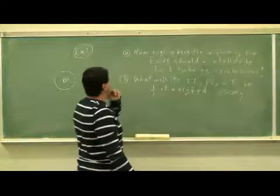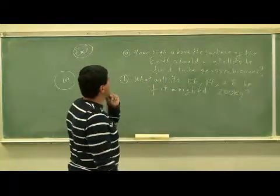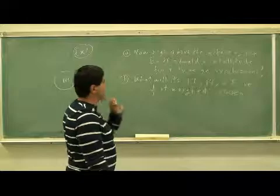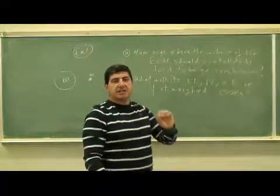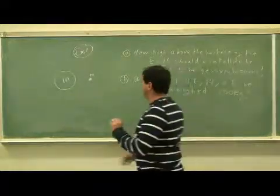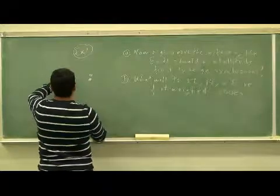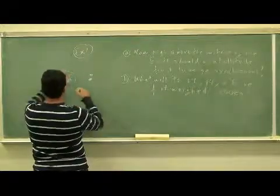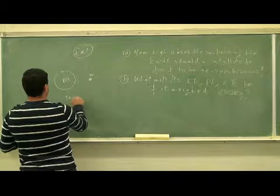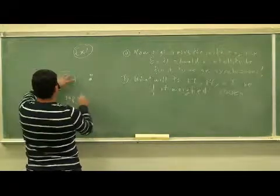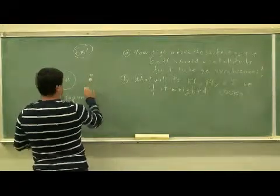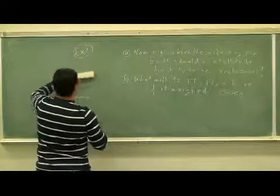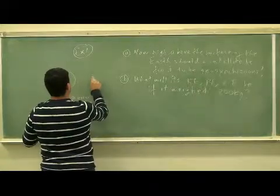How high above the surface so that it could be geosynchronous? Geosynchronous means that it is always at the same spot on the Earth. So as the Earth is spinning, let's say this is a top view. So let's say the satellite, I'm going to draw it kind of like as a satellite.